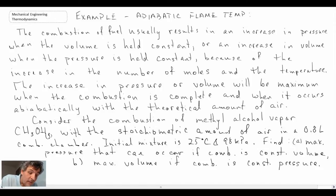So there is our problem statement. It's a rather long problem that we're dealing with, but what we have is we're combusting methyl alcohol vapor, and we're told that it is in a container, 0.8 liters, originally 25 degrees C and 98 kPa. And what they want us to do is determine max pressure if combustion is constant volume.